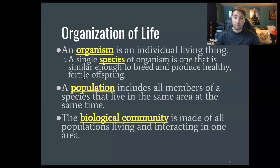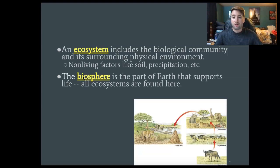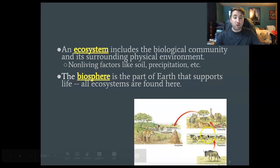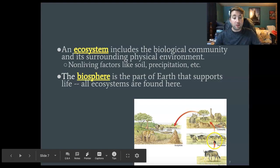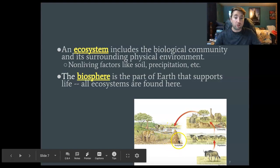The next stage of organization is the ecosystem. An ecosystem is the biological community — all those living things interacting — plus the physical environment. It includes non-living things like soil, precipitation, pH, humidity, and all those different things. So you have one individual organism, then a population of the same species, then a biological community with other living things like a yak and a rhino. When you include non-living things like water and geological features, that's going to be an ecosystem.